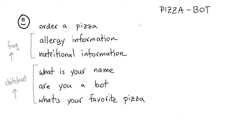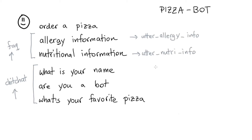For example, no matter what happens, if the user is asking for allergy information or nutritional information, then we always have to utter the text that brings them to the appropriate page that has that information. And similarly, all of these questions have a single sentence answer.